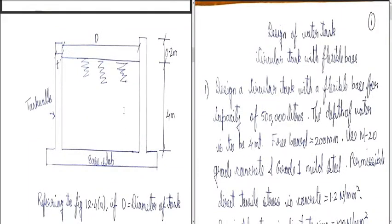Welcome students. In today's lecture on design of water tanks, in the previous lecture we discussed the circular water tank. We discussed IS 3370 Part 1, which covers general instructions for storage of liquids; IS 3370 Part 2 for reinforced concrete structures including design components, workmanship and site specifications; IS 3370 Part 3 for pre-stressed concrete structures; and IS 3370 Part 4 which provides design tables for water tanks.